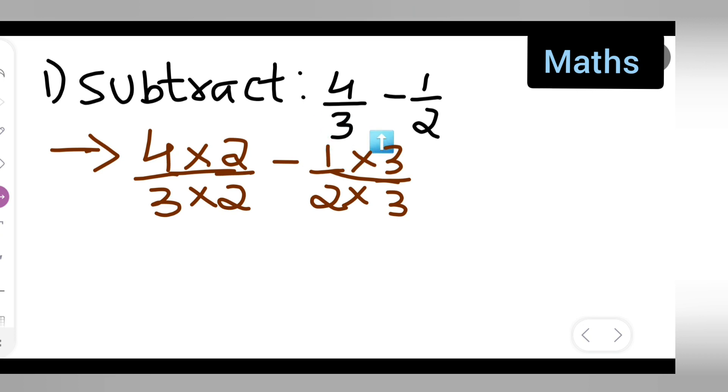Now I'll write down 4 times 2 is 8, 8 upon 3 times 2 is 6, so write down 8 upon 6 minus 3 upon 6. Now what is this? 4 times 2 is 8, 3 times 2 is 6, 3 times 1 is 3.